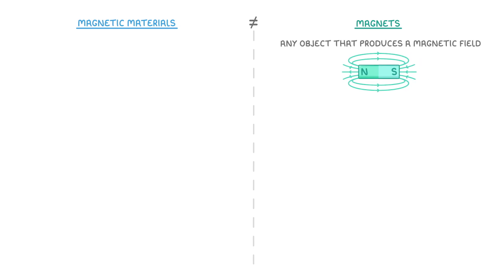One of the confusing things about magnetism is that not all magnetic materials are actually magnets. An actual magnet is any object that produces a magnetic field, while a magnetic material is any object that can be influenced by a magnetic field and has the potential to become a magnet.